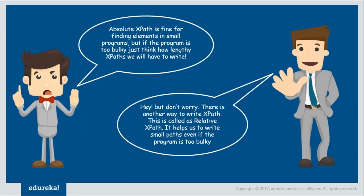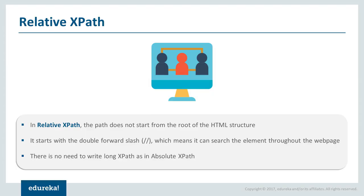If the web element is at the end of the page with absolute XPath, that would be a problem. That is when we go with relative XPath, which starts from the current node and is much smaller. In relative XPath, the path does not start from the root of the HTML structure — it always starts from the current node with a double forward slash. There is no need to write long XPaths as in absolute XPath.